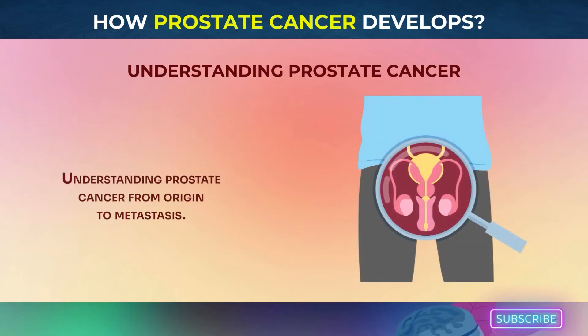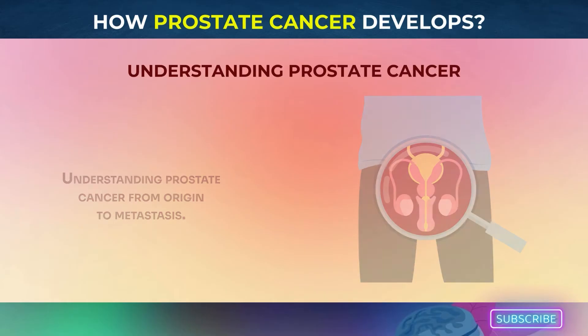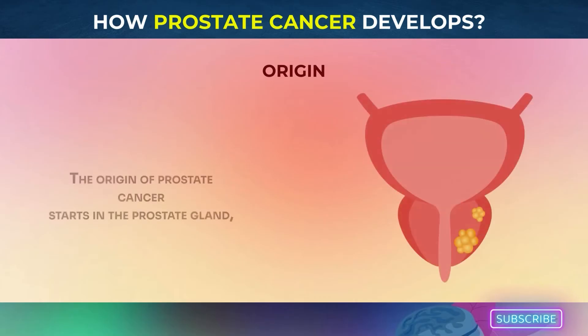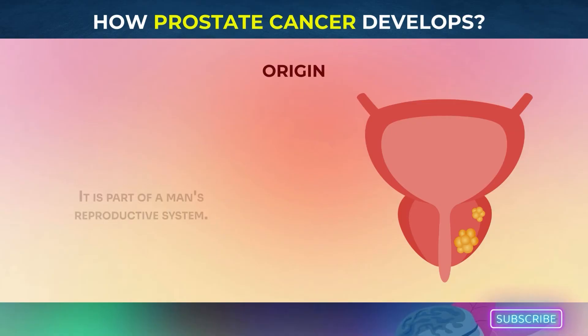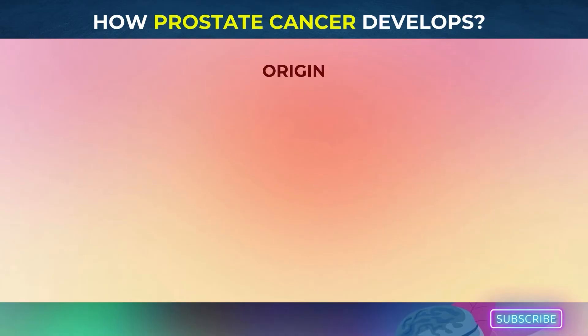Understanding prostate cancer from origin to metastasis. The origin of prostate cancer starts in the prostate gland, which is in front of the rectum and below the bladder. It is part of a man's reproductive system.